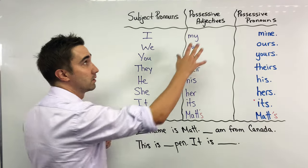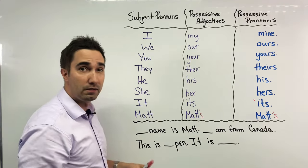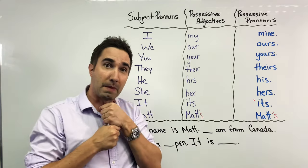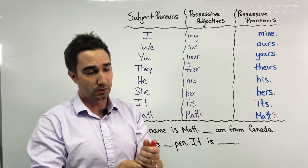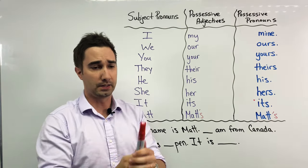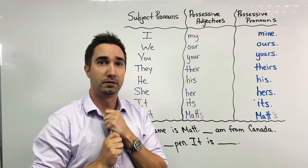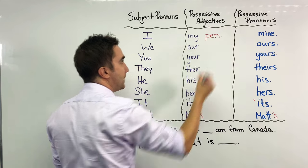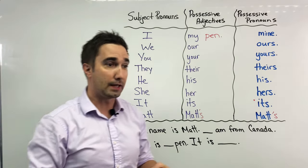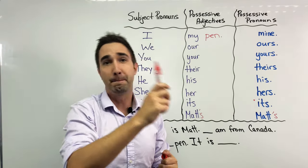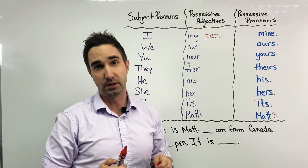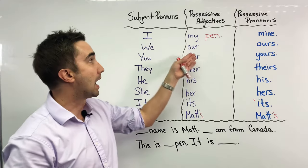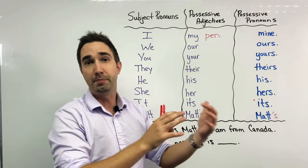Today the main focus are possessive adjectives and possessive pronouns. Now possessive means like mine. So I can say this is a pen, I can say this is my pen. I can say it's a red pen. Red is also an adjective. So I can say my pen, or it is a red pen.